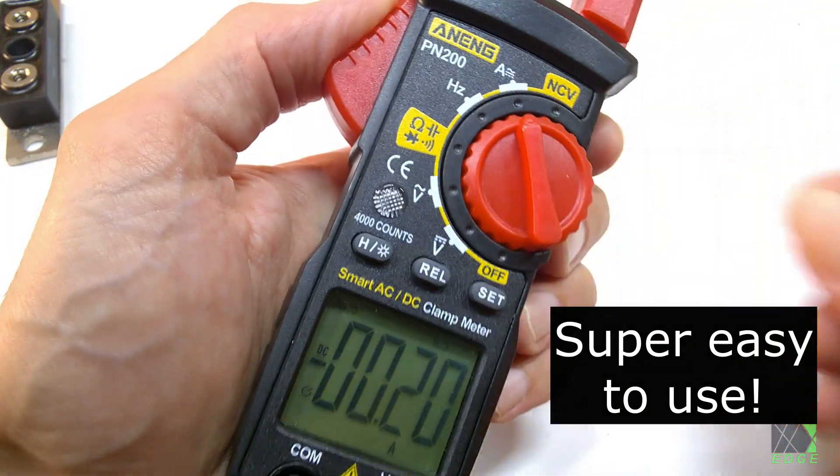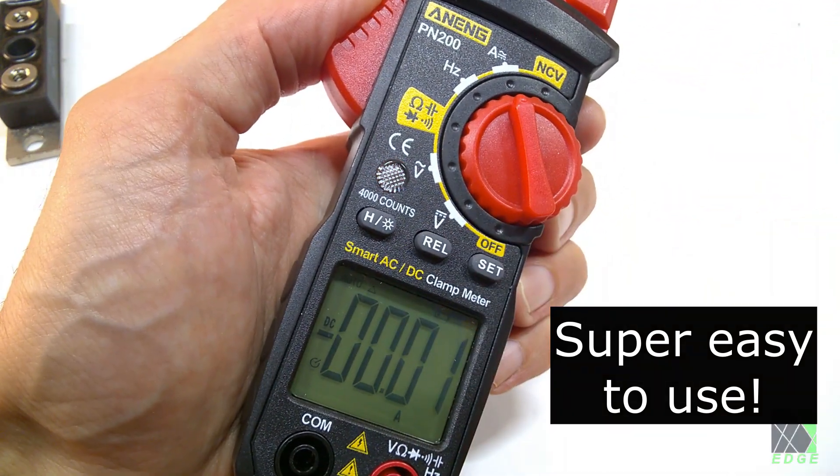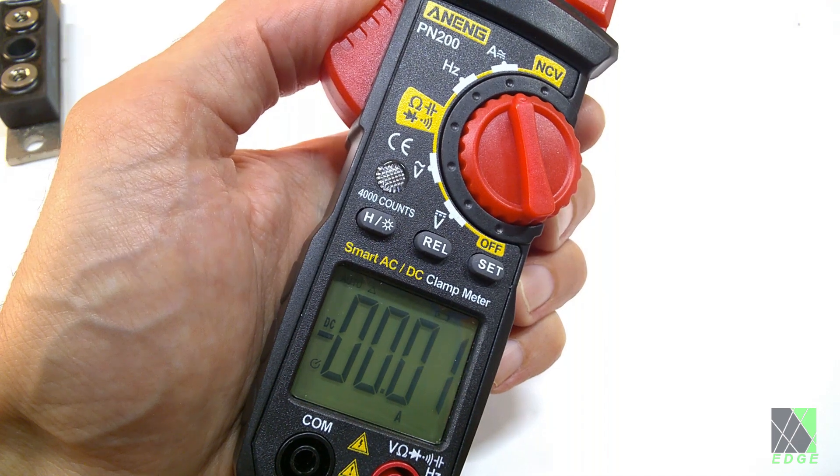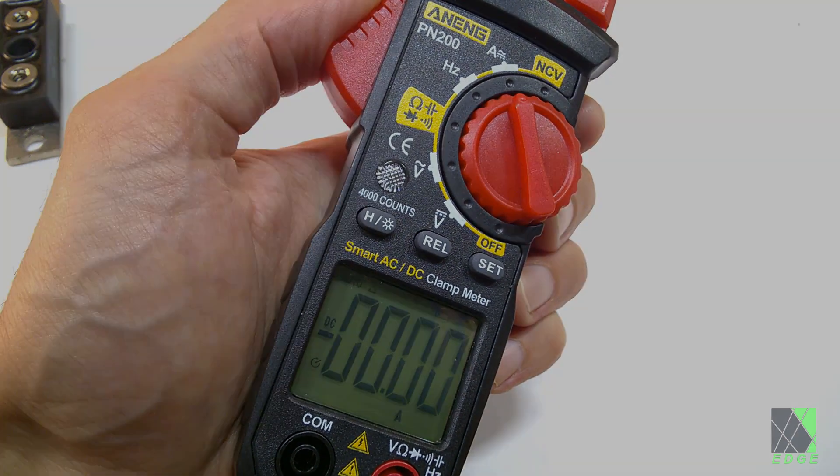Using the rel or zero function zeros out the meter before taking a reading. Be sure to select AC or DC mode depending on which type of current is being measured.